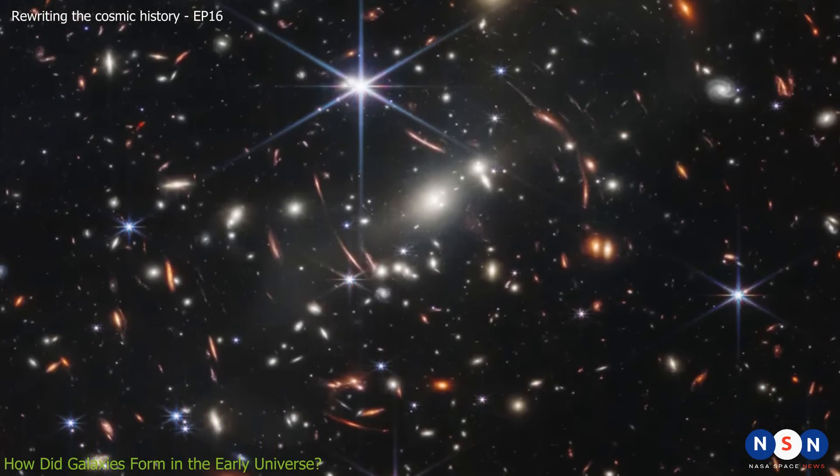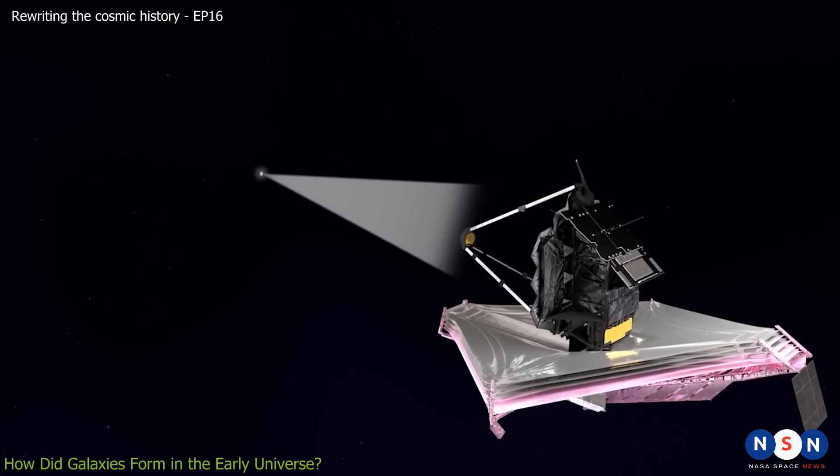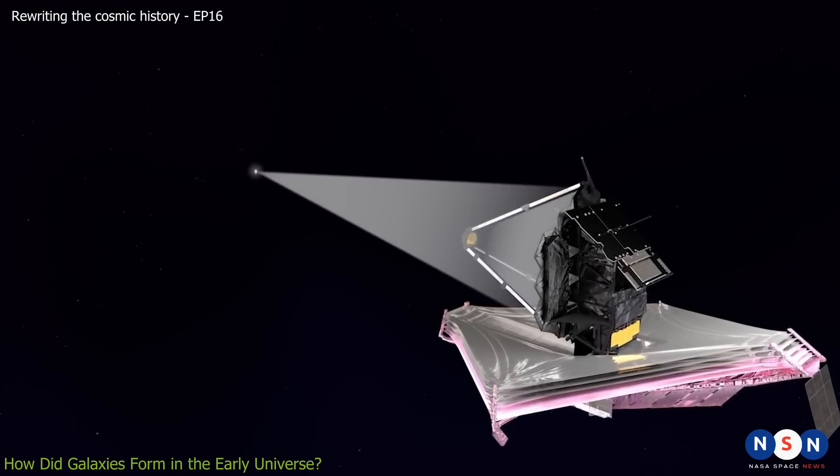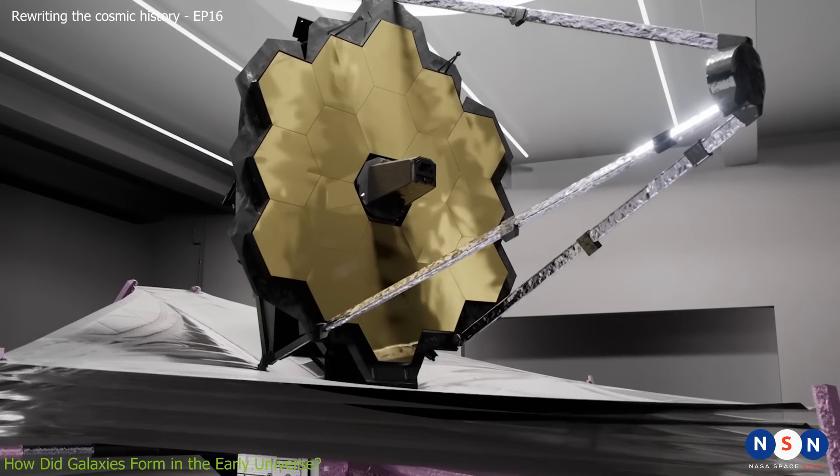To see these ancient galaxies, we need a powerful telescope that can detect infrared light, which is invisible to our eyes. That's where the James Webb Space Telescope comes in.